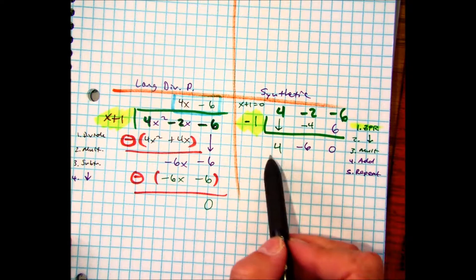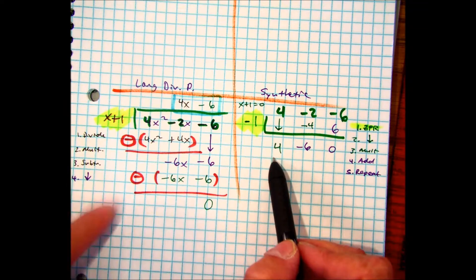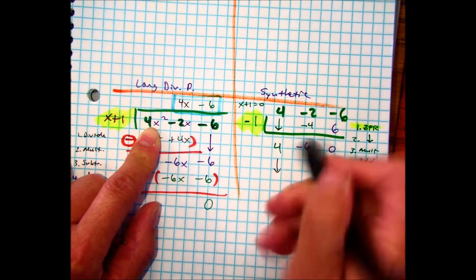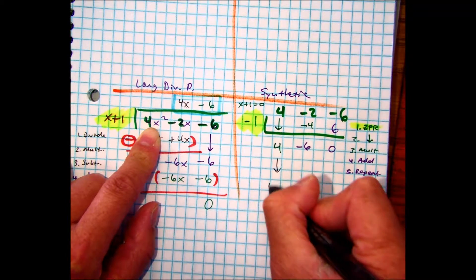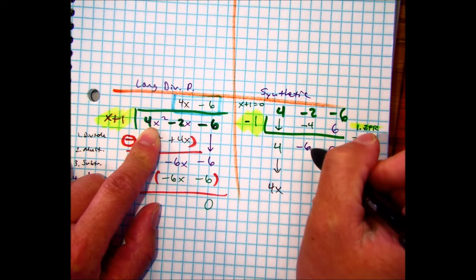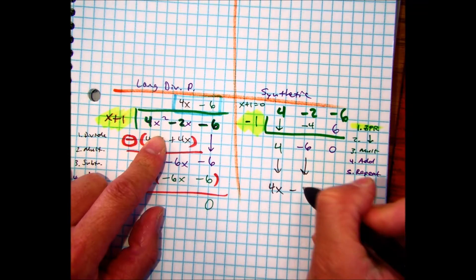Now this is one less degree. Everyone say one less degree. The highest degree was x². So this is going to represent one less than that. So that'll be 4x. And this one won't represent x. This will just represent minus 6.